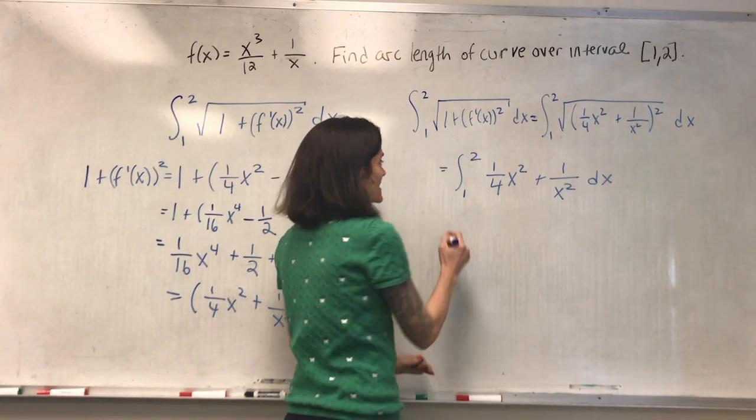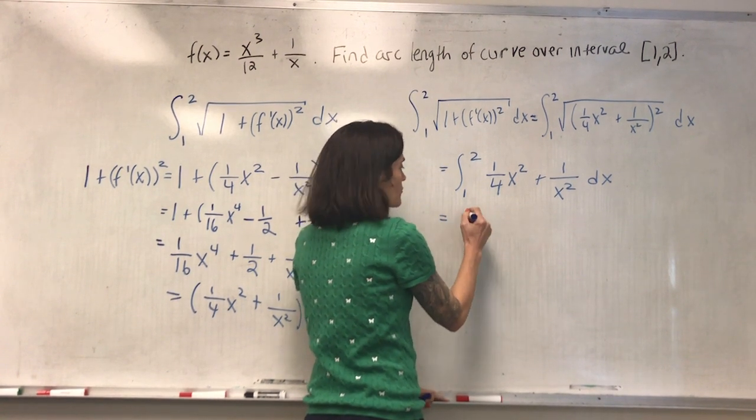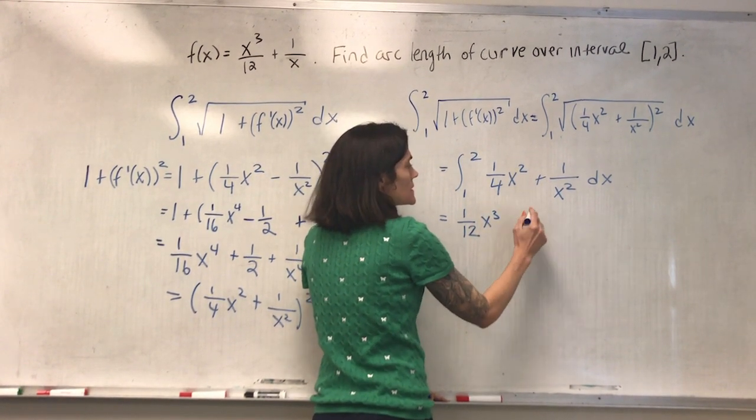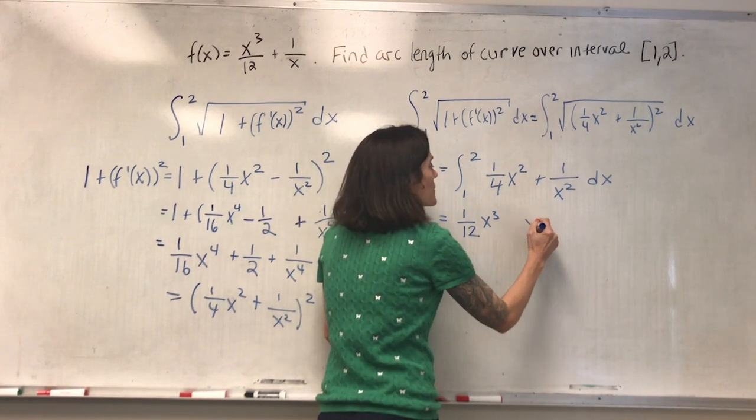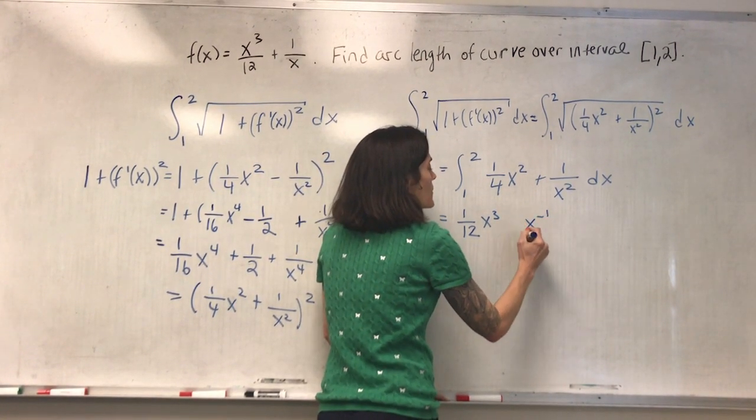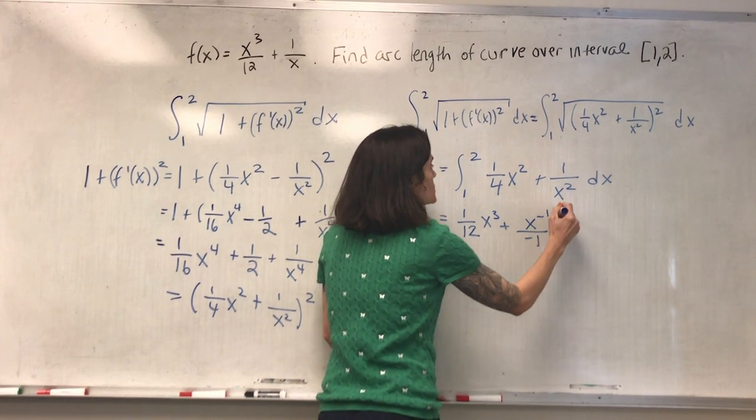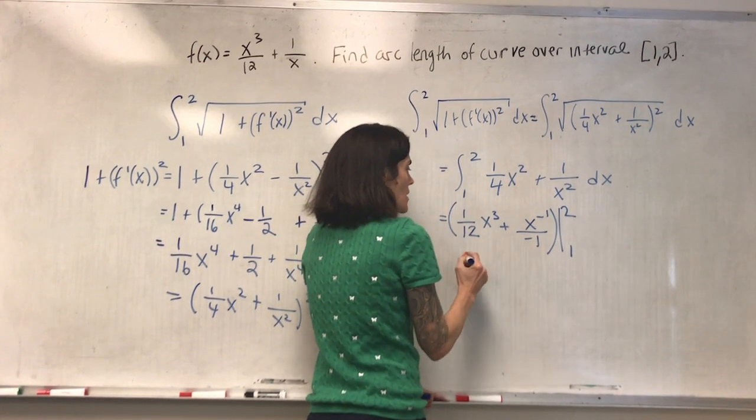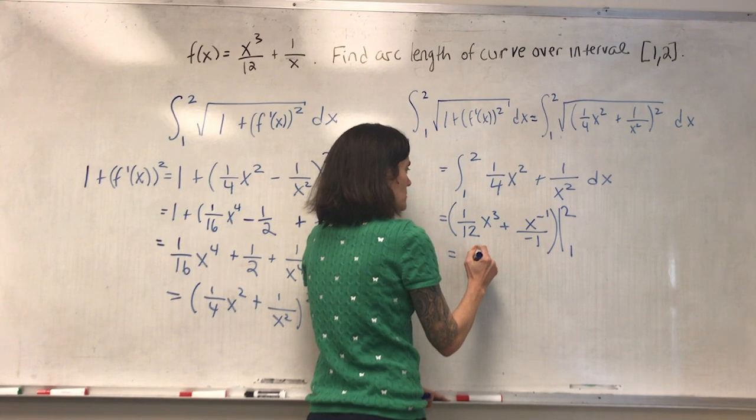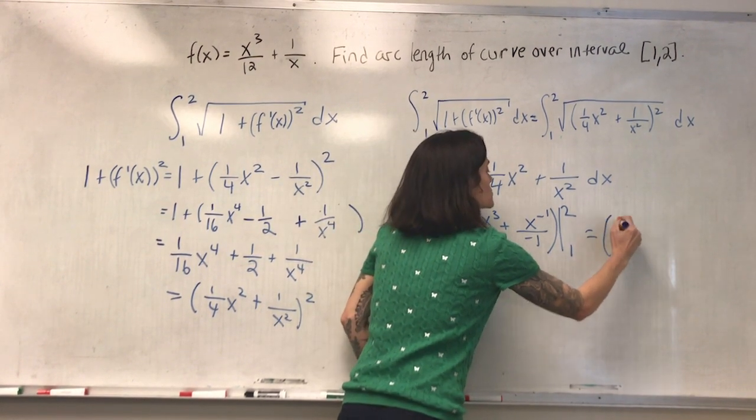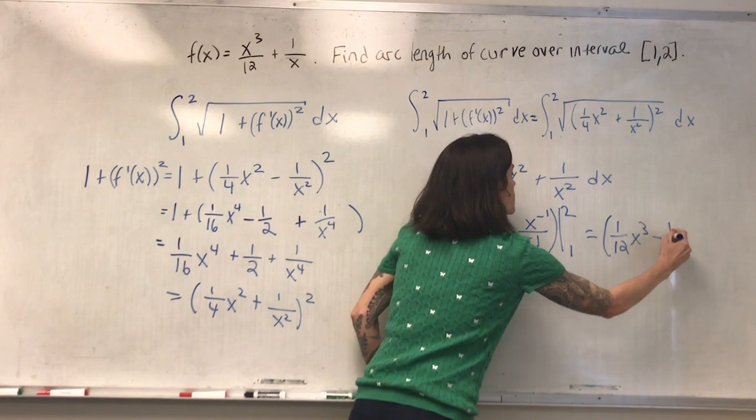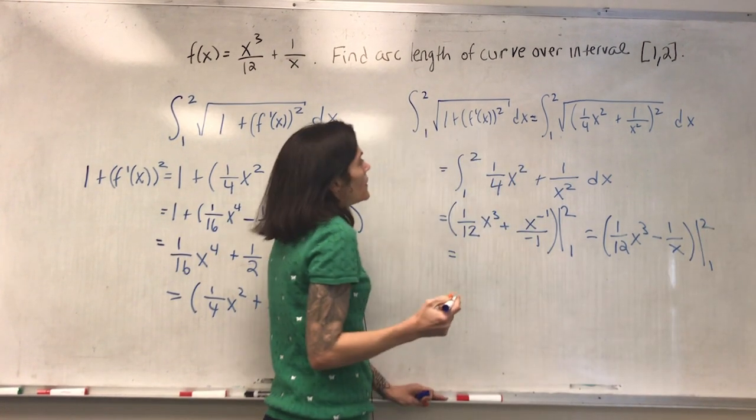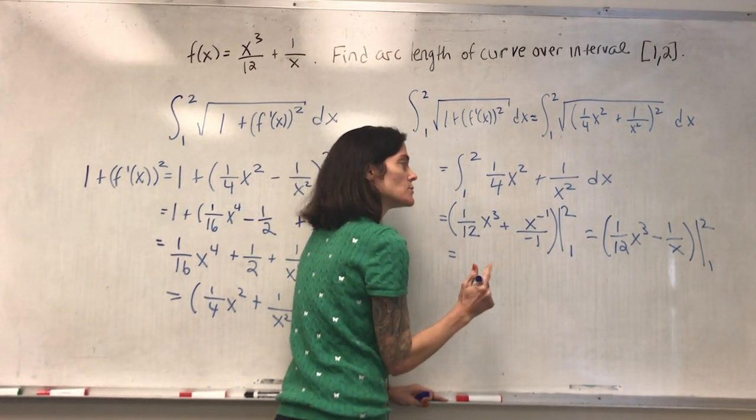Now, this is something I'm prepared to integrate. I can integrate as I'm used to. We add a power, divide by the higher power. Here, this is a negative two power, so I would add a power, divide by the higher power, like this. Maybe I'll do that one in two steps, evaluated from one to two. This is one over 12 x cubed minus one over x.